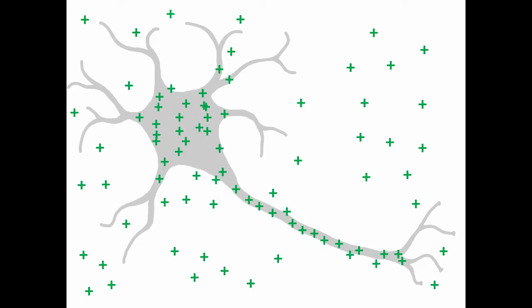However, all good things must come to an end, and eventually your friends leave and go home. The extra positively charged ions also cross the neuronal membrane and exit the neuron, which allows it to return to a resting state. We refer to this momentary shift of ions rushing in, then out of the neuron, as an action potential.